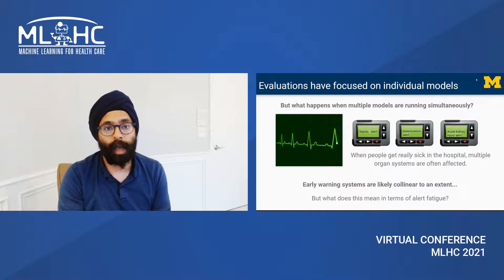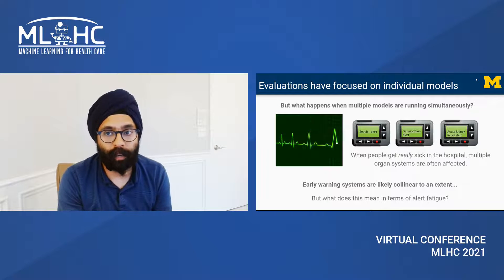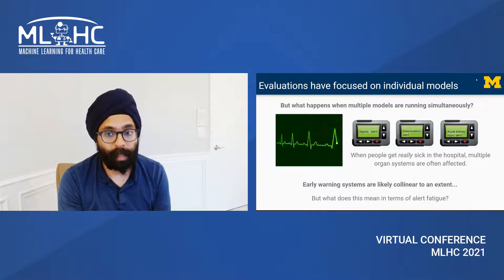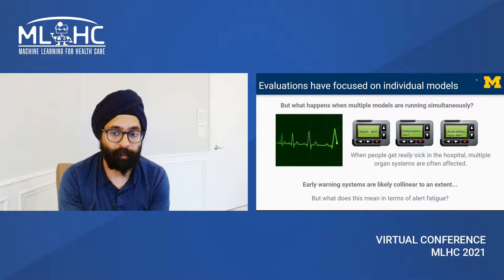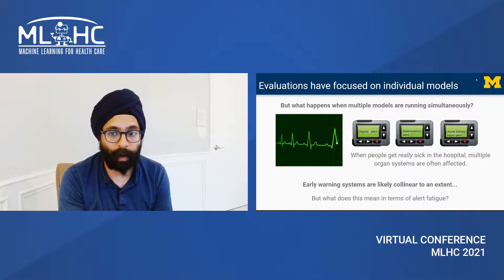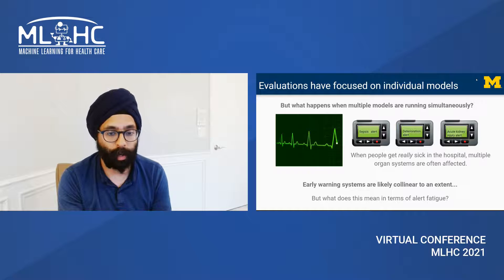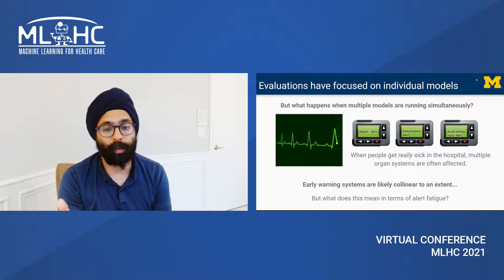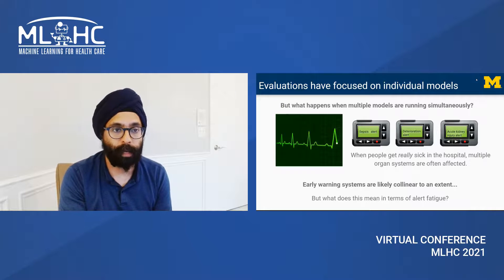Most published evaluations have focused on individual models, but what happens when multiple models are running simultaneously? When people get really sick in the hospital, multiple organ systems are often affected, so it's not surprising that a sepsis alert could turn into a deterioration alert and then an acute kidney injury alert. Early warning systems are likely collinear to an extent, but what does that mean in terms of model overlap and alert fatigue?